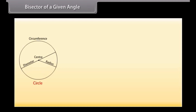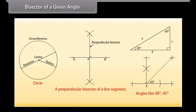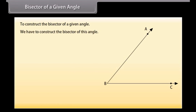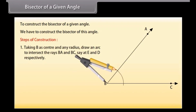Bisector of a given angle. Friends, we know how to construct a circle, a perpendicular bisector of a line segment, and angles like 30 degrees and 45 degrees. Now we will learn to construct the bisector of a given angle. Let us take an angle ABC. We have to construct the bisector of this angle. First of all, taking B as center and any radius, we will draw an arc to intersect the rays BA and BC, say at E and D respectively.